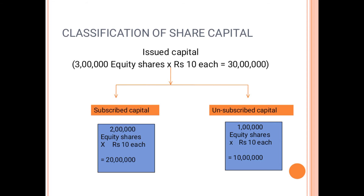There are also two related concepts: over-subscription and under-subscription. When a company issues shares and receives more applications than the shares issued, it is called over-subscription. For example, the company wants to issue 3 lakh shares but receives 4 lakh applications — that is over-subscription. Under-subscription is when the public wants less than the number of shares issued.